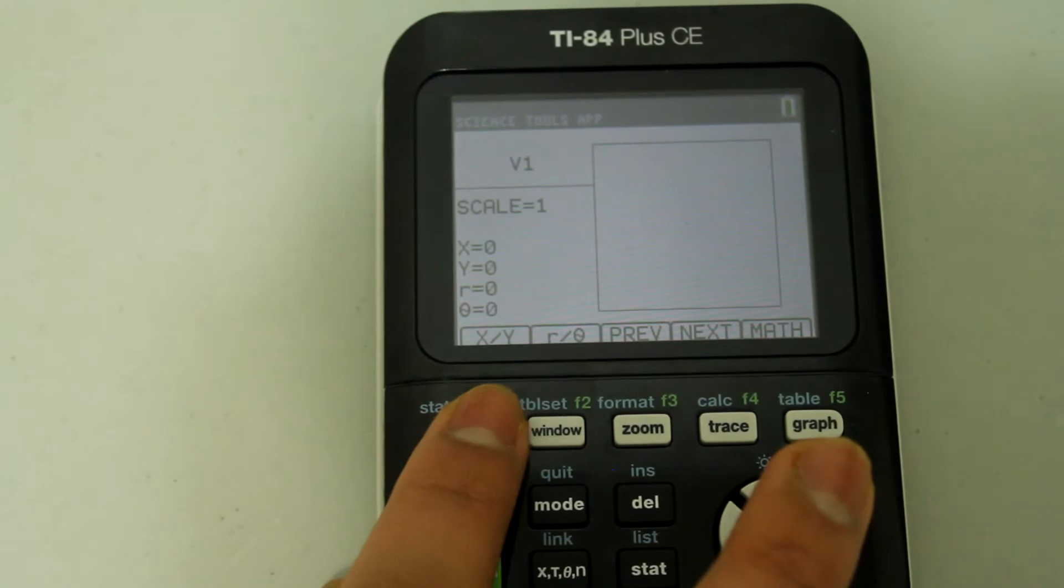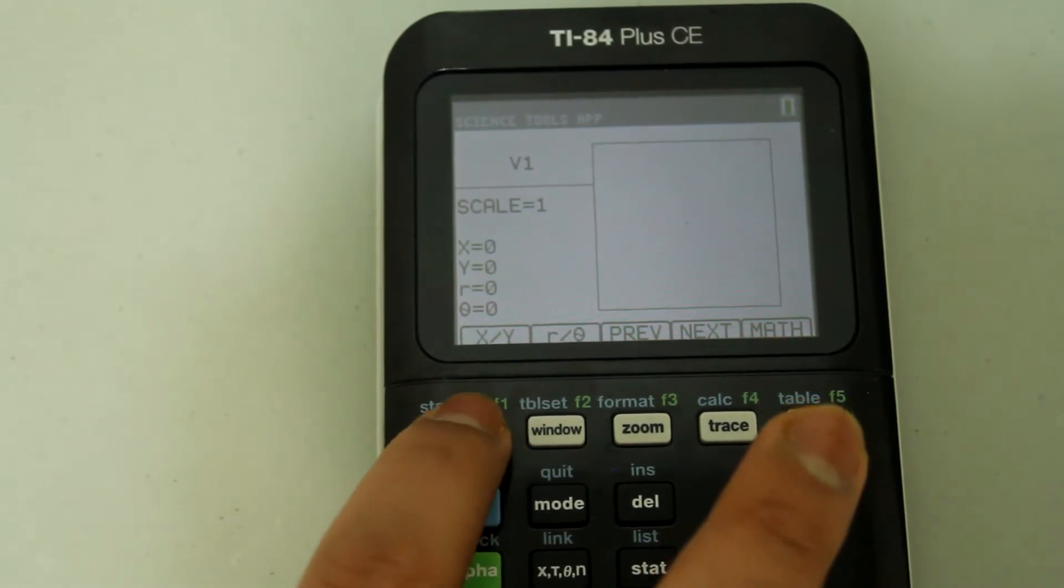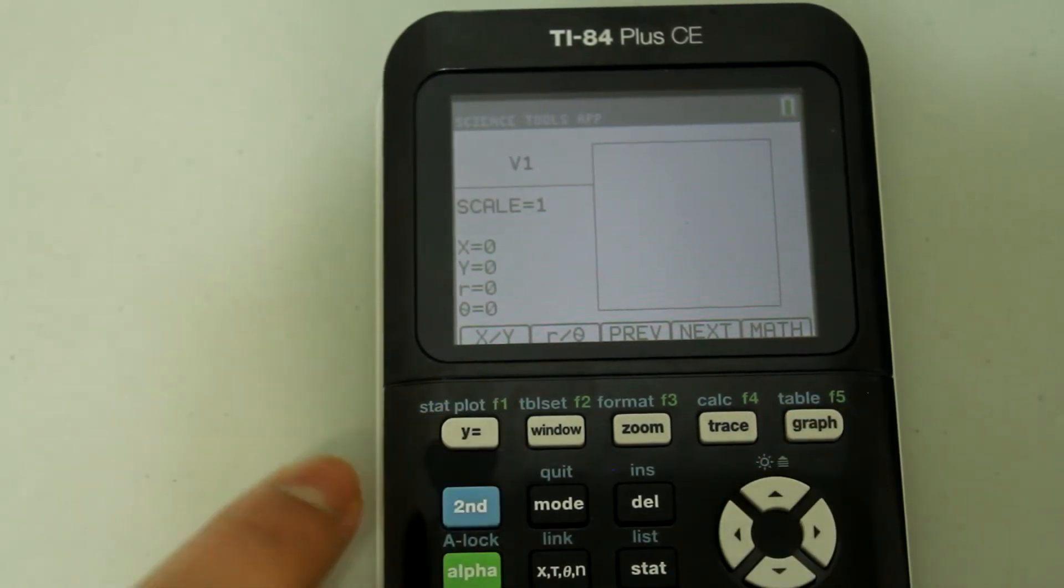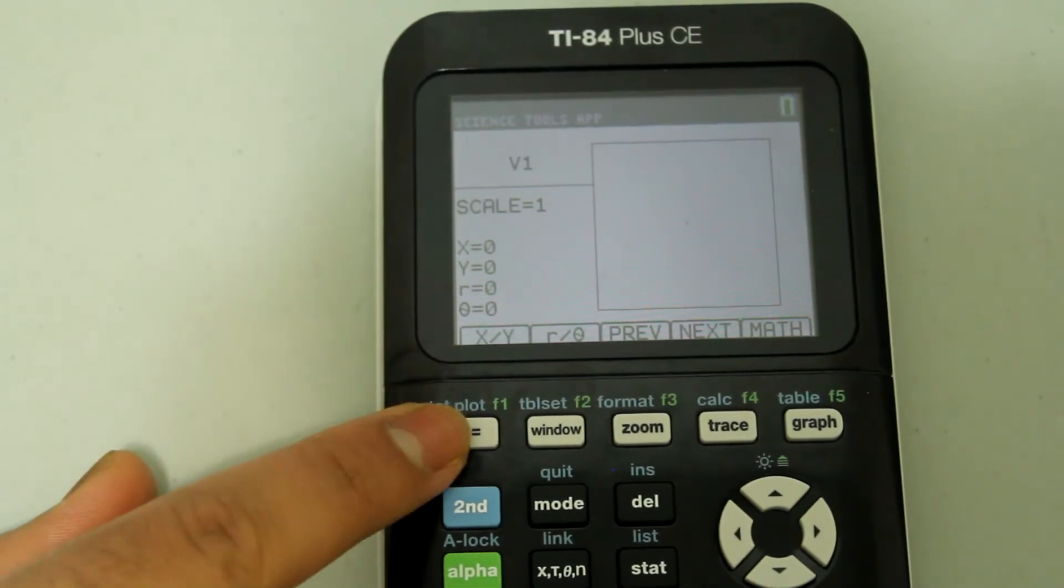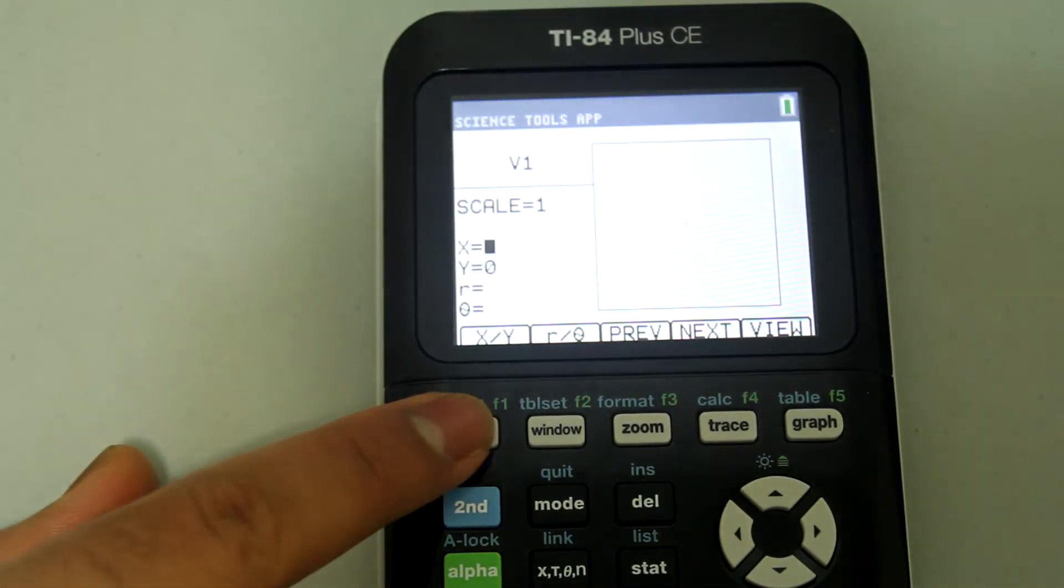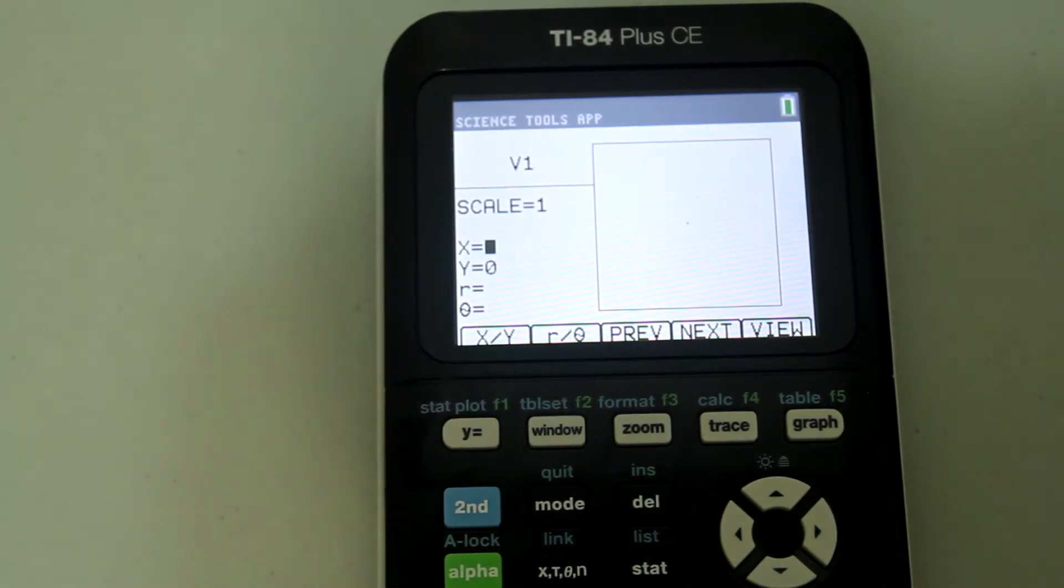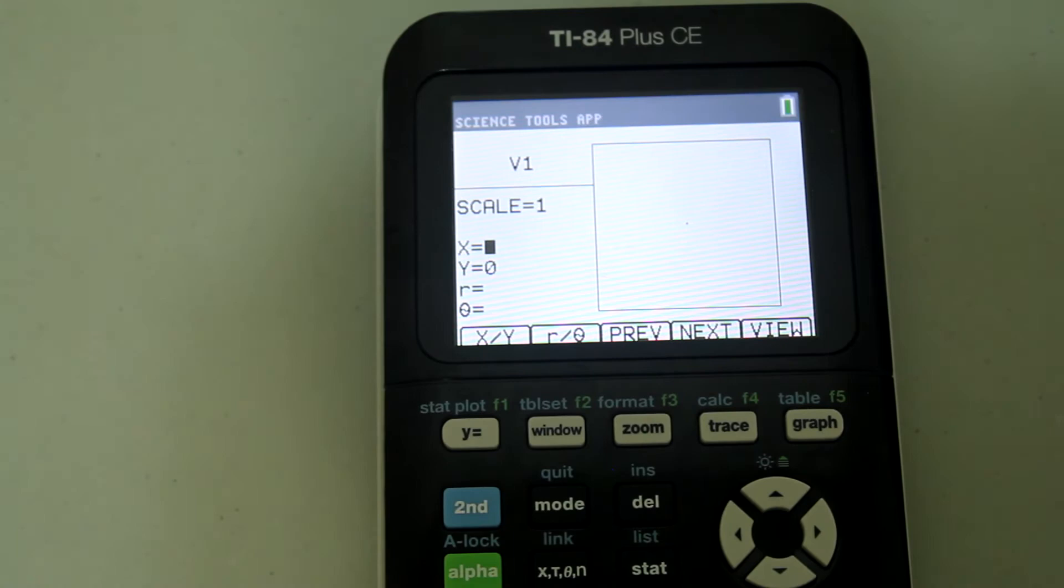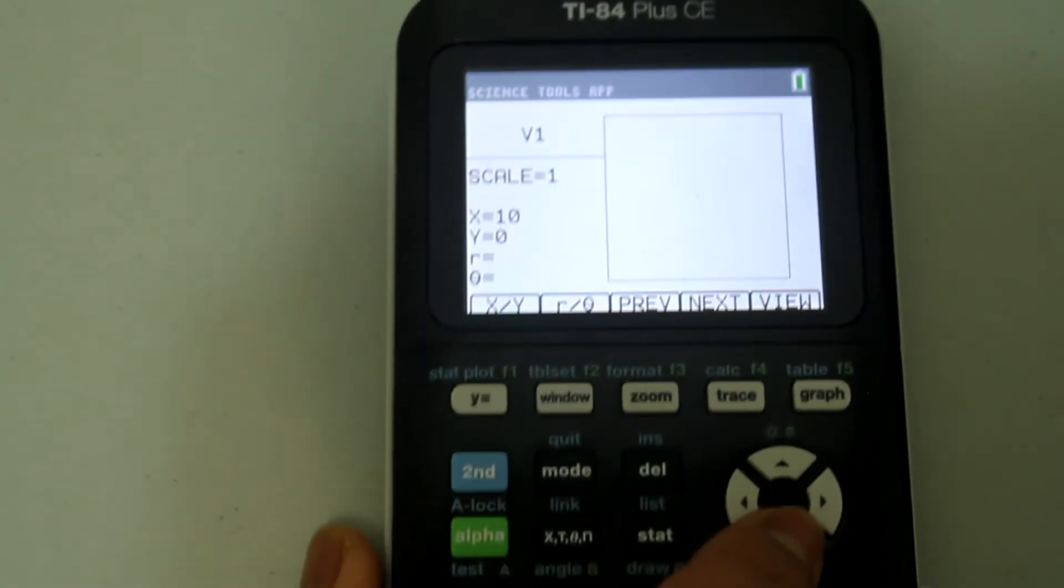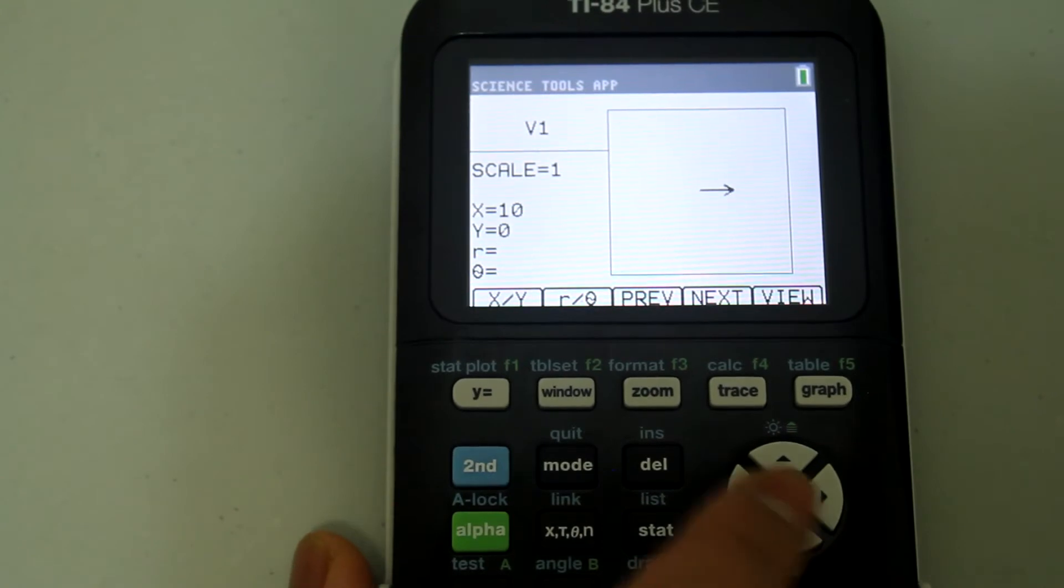First, let's graph the vector with x component of 10 and a y component of 10. Press the button under x slash y which is the y equals button and now you see that the cursor is flashing right next to the x. Type in 10 and then arrow down to y. Type in 10 and press enter.